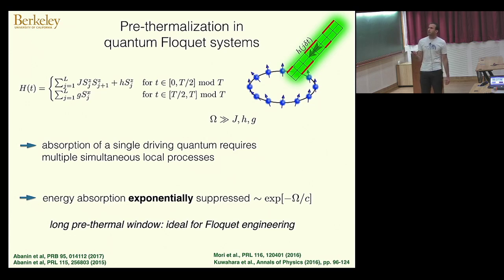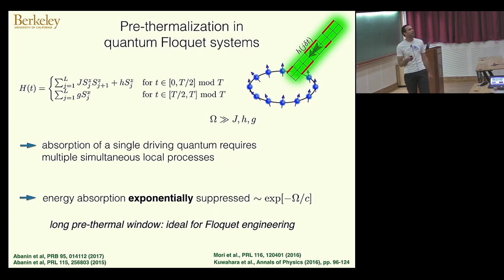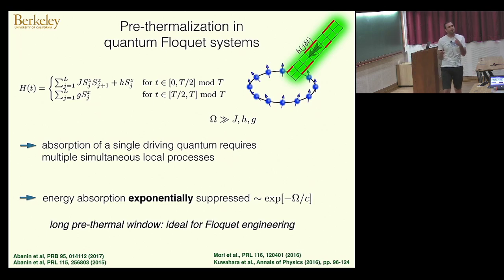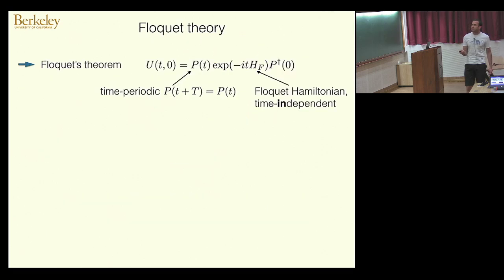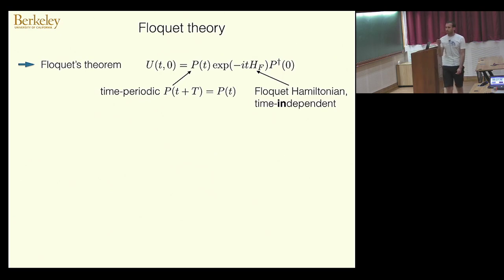Pretty much everyone who has been working on pre-thermalization in quantum systems in one form or another was here or will be here in this workshop, so there are many experts to talk to. The question now is: how can we understand this pre-thermal plateau? I would like to briefly introduce Floquet theory for this purpose.